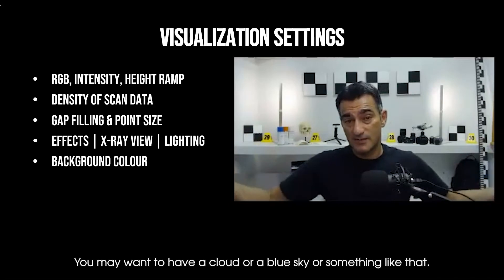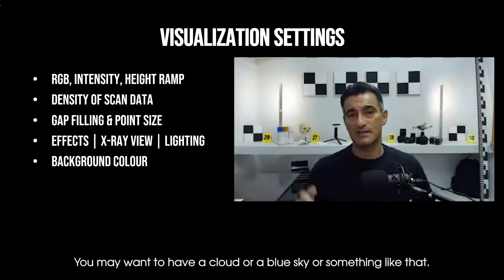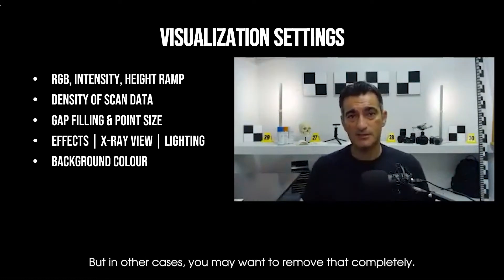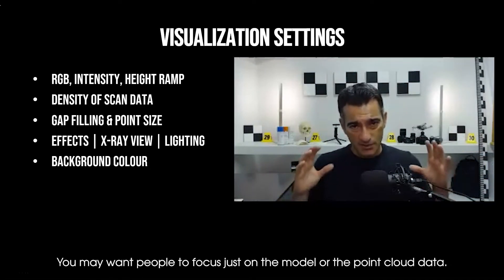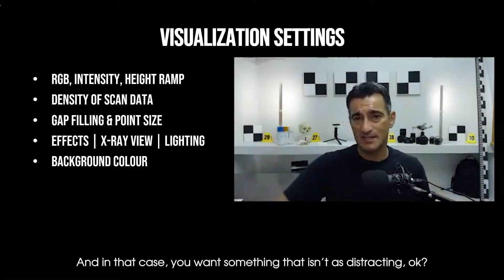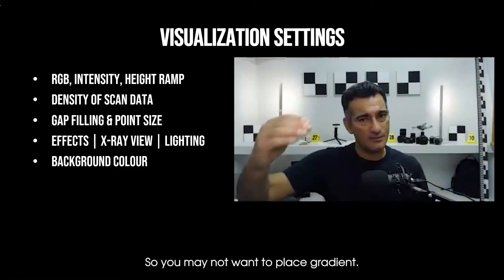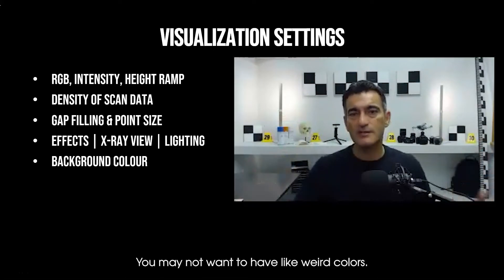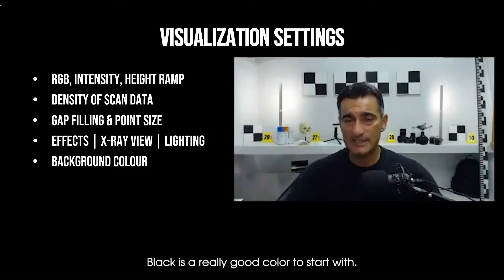Let's say for example you have an outdoor scene - you may want to have a cloud or blue sky or something like that, and as you fly around it you kind of see that. Some software packages will give you that particular option. But in other cases you may want to remove that completely. You may want people to focus just on the model or the point cloud data, and in that case you want something that isn't as distracting. You may not want to place a gradient or have weird colors.